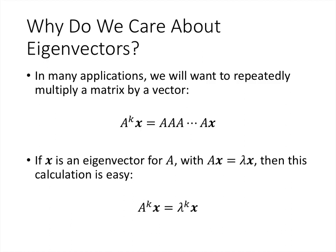But why do we care about this? What we're going to see is that in many applications, what we end up wanting to do is multiply a matrix by a vector over and over and over again — repeatedly multiplying a matrix A by a vector. This notation here, A to the k, just means A multiplied by itself k times. And so what we get is we're multiplying the matrix A by x, and then we multiply A by the result, and then we multiply A by the result of that, and so on.